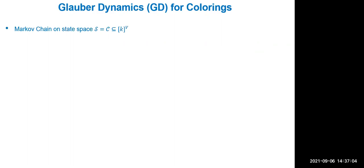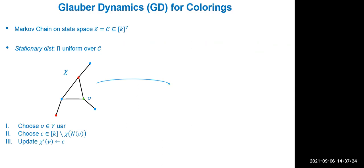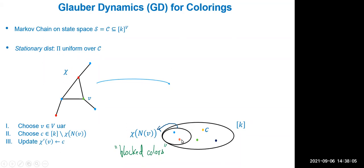Before everything, let me describe the bedrock of our arguments: a sampling technique called global dynamics. The name comes from physics, since much of the Markov chain literature is inspired by physics. Global dynamics is a random process: given a graph and a coloring chi, step one is to choose a vertex uniformly at random — say vertex v. Then the algorithm looks at the colors occupying the neighbors of v, which form the 'block set'.